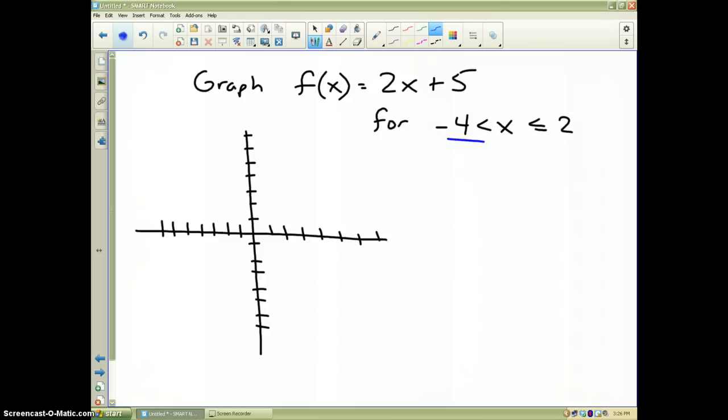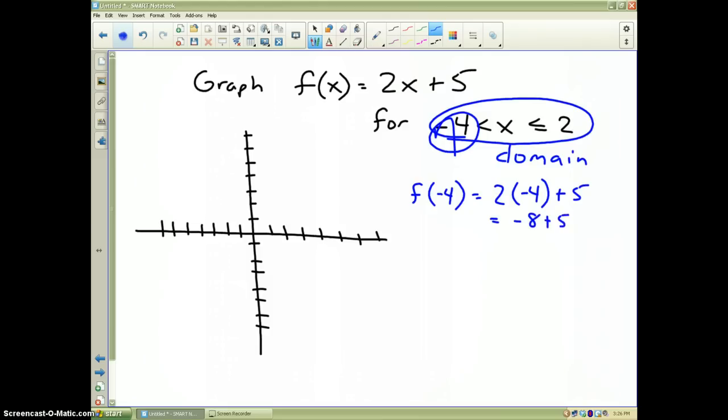Now, what I'm looking at right here, as you learned from an earlier lesson, the x values are the domain. What it's telling me is the lowest number I can use for x is negative 4. So, if I evaluate f of negative 4, and I put that into my problem, I find out that my y value is negative 8 plus 5, which is equal to negative 3.